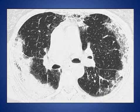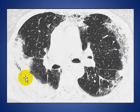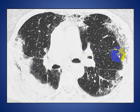Here we have a CT scan of a patient with bilateral peripheral areas of consolidation involving both lungs, more to the right side. This patient has chronic eosinophilic pneumonia.